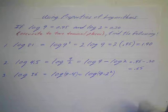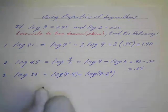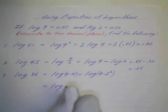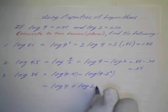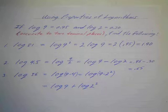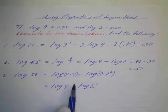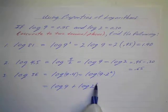2 squared, probably should put these in parentheses because they're products. And now we can use our first property, our product rule, and we can say that this is going to be equal to the log of 9 plus the log of 2 squared.